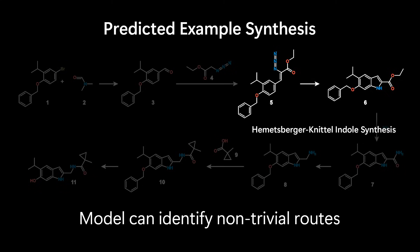And just to give you an example of these rare reaction cases, the model is able to predict this specific Hemetsberger-Knittel indole synthesis step, which maybe as a chemist, you will not immediately think about. But the model is able to retrieve it and propose it.